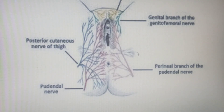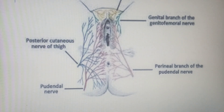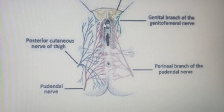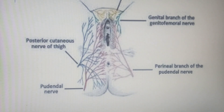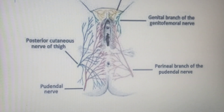This is clinically relevant for instrumental delivery. If a pregnant woman is going to be delivered using forceps, you have to block the pudendal nerve because the chief nerve supply to the perineum is the pudendal nerve. Blocking it reduces the pain associated with the procedure.